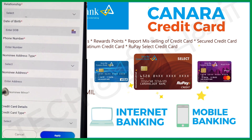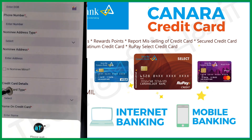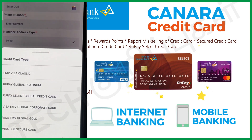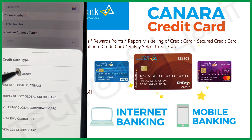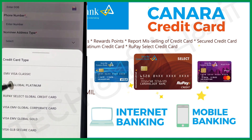If you have a nominee who is a minor, you can click on that option. If yes, click on that. You can then select the type of credit card. The available card types include: VISA Classic, VISA EME Global, Rubei Global Platinum, Rubei Select Global Credit Card, VISA EME Global Corporate Card, VISA EME Global Gold, and VISA GLV Secure Card.